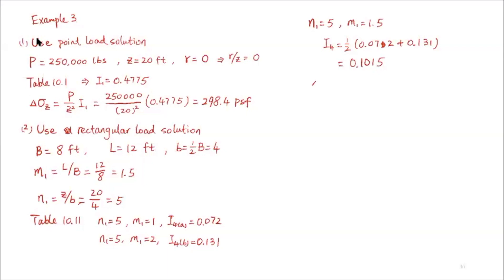Once we have I4, we can calculate Δσz = Q × I4, where Q is the surface pressure. The surface pressure equals the load over the area: Q = P/(L × B) = 250,000 divided by 12 times 8, which equals 2,604 PSF.